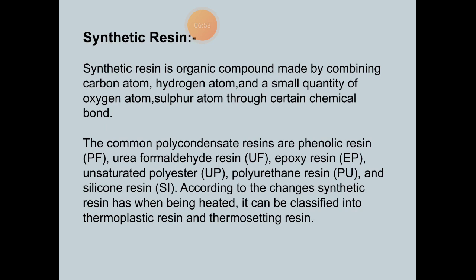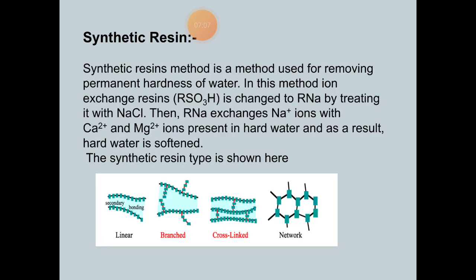According to the changes synthetic resins undergo when heated, they can be classified into thermoplastic resins and thermosetting resins. The synthetic resin method is also used to remove permanent hardness of water. In this method, ion exchange resin RSO₃H is changed to RSO₃Na by treating it with NaCl. The resin then exchanges Na⁺ ions with Ca²⁺ and Mg²⁺ ions present in hard water, and as a result, hard water is softened.